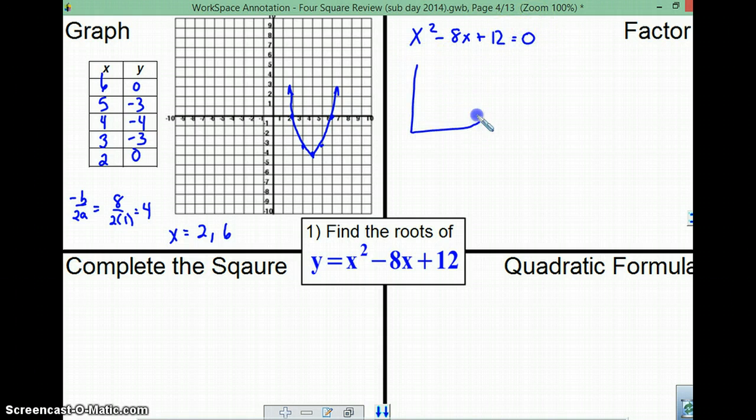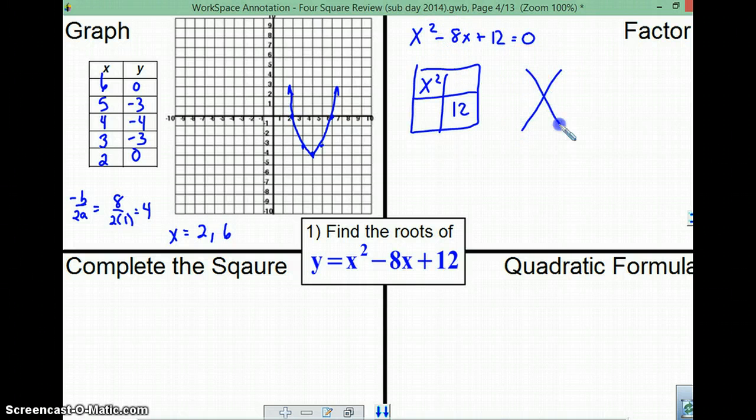Now, we factor it. First, we use the box. We've got our x squared. We've got our 12. We need to figure out how to split this term. Use the x. We end up with 12x squared, negative 8x. What two numbers? Negative 6x, negative 2x. Put them in here.